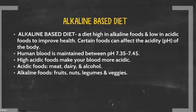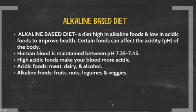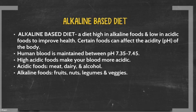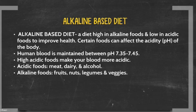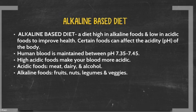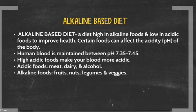In order to understand what an alkaline-based diet is, you first have to be familiar with the pH scale. The pH scale is the scale that is used to specify the acidity or basicity of an aqueous solution. All foods and things that we drink are either acidic, neutral, or alkaline. Acidic foods or beverages fall on the scale between 3 and 6. Neutral foods and beverages fall on the scale at 7, and alkaline foods and beverages fall on the scale between 8 and 10. An alkaline-based diet is a diet high in alkaline foods and low in acidic foods to improve health. Certain foods can affect the acidity of the body. The human blood is maintained between the pH scale of 7.35 and 7.45.